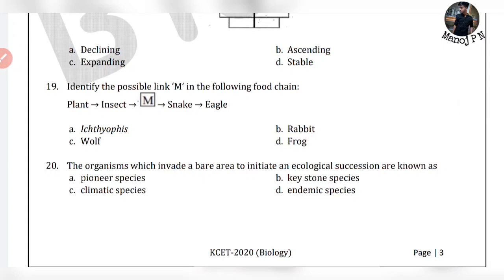Identify the possible link M in the following food chain: plant → M → insect → frog → snake → eagle. So this is option D: frog.